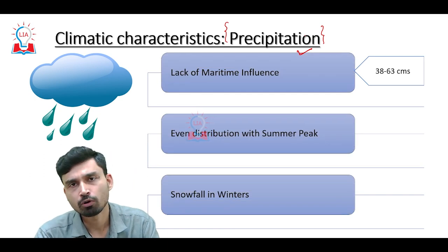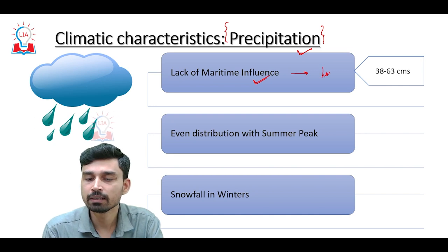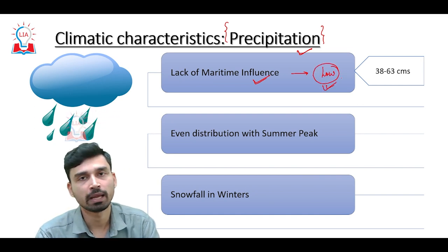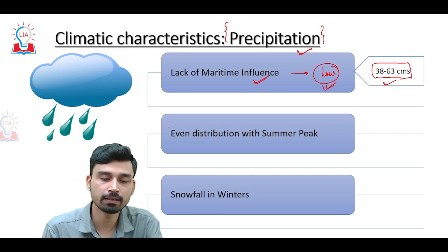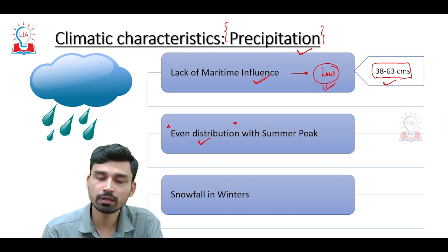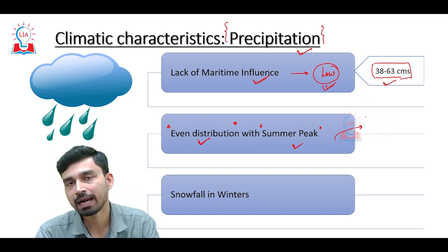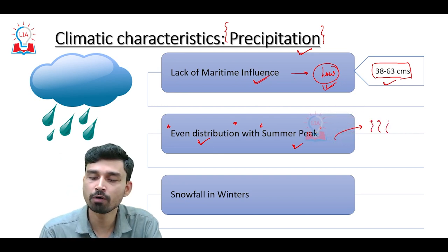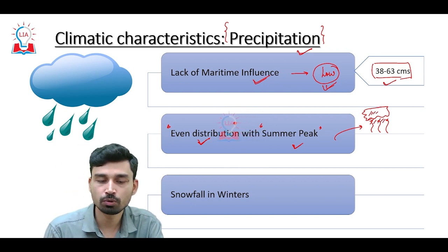The second factor is precipitation or rainfall. Since this climatic region is surrounded by land on all sides, maritime influence is lacking, and thus the amount of rainfall is very low. The average annual rainfall stands somewhere between 38 to 63 centimeters. Rainfall is evenly distributed throughout the year — sometimes in liquid form, sometimes as snow. In summer, the peak of rainfall is achieved because the continental interior heats up, causing convection currents to rise, moisture to condense, clouds to form, and thus rainfall to occur.